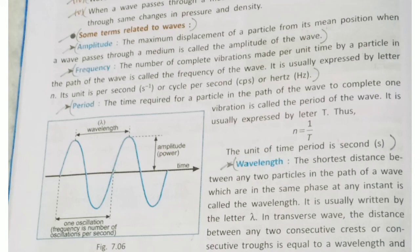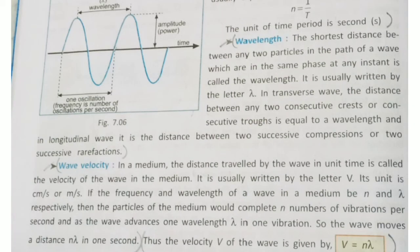Period: the time required for a particle in the path of the wave to complete one vibration is called the period of the wave. The mathematical relation is N = 1/T, where N is the frequency and T is the period. So N and T are inversely proportional. Wavelength: the shortest distance between any two particles in the path of a wave that are in the same phase at any instant is called the wavelength, usually written by the letter lambda (λ).